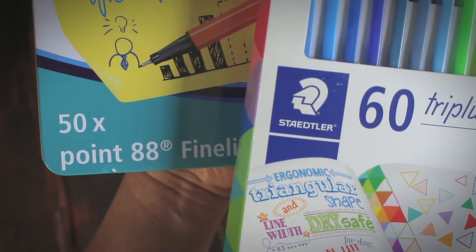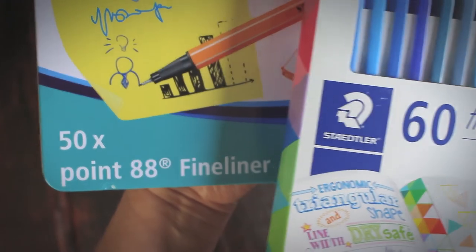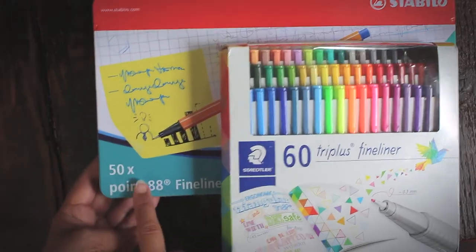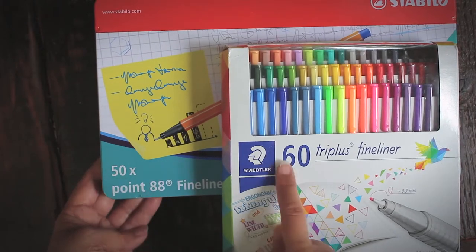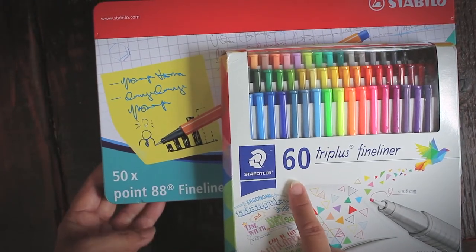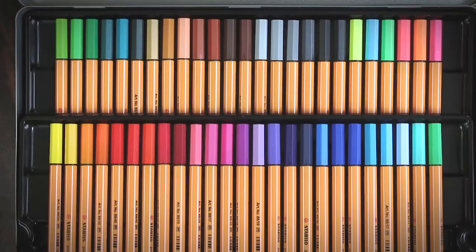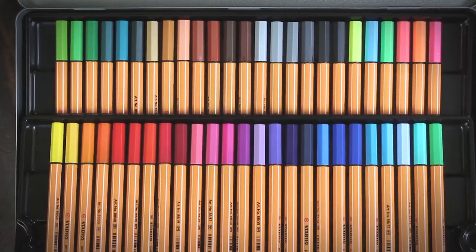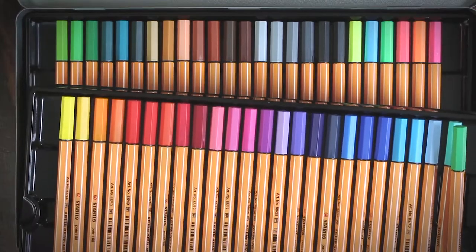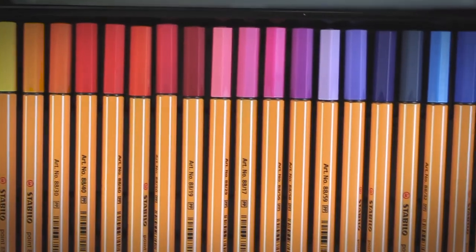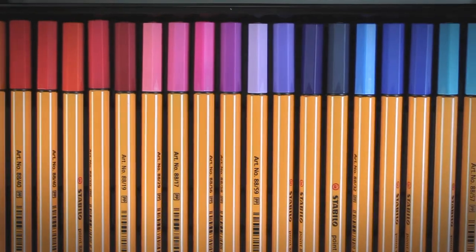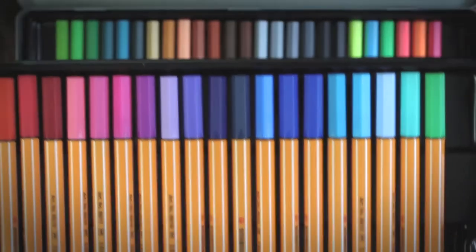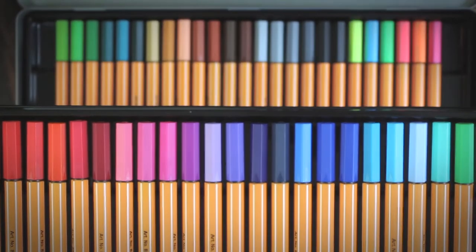The Stabilo Point 88 fineliner set I have in this review has 50 pens, while the Triplus has 60 colors. Stabilo has smaller packs available. The smallest set has 6 basic colors, followed by an assortment of 8 shades in a plastic wallet. Stabilo also has a 10-piece set, a 25-piece set, a 30, and a pack of 40 colors all in a wallet. And they're pretty flexible.